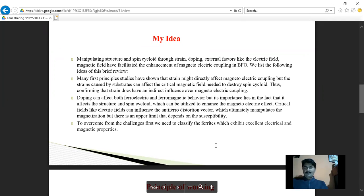Critical fields like electric fields can influence the antiferromagnetic vector which ultimately manipulates the magnetization. But there is an upper limit that depends on magnetic susceptibility. And last, to overcome these challenges, first we need to classify the ferrites which exhibit excellent electric and magnetic properties.